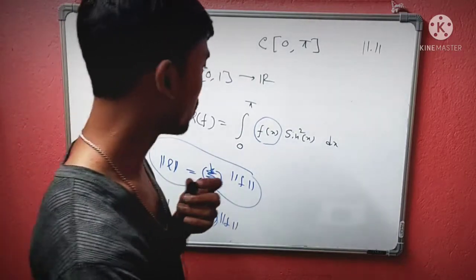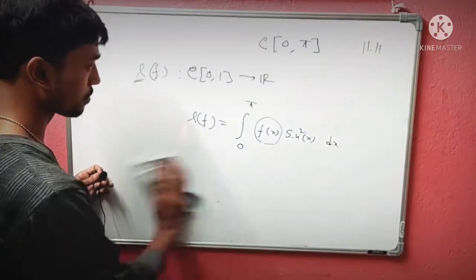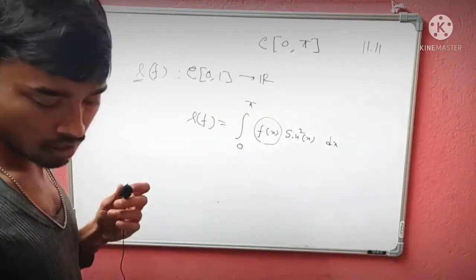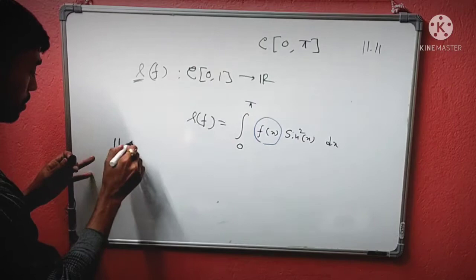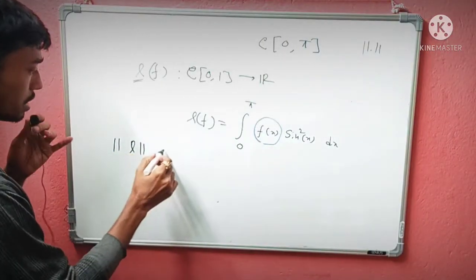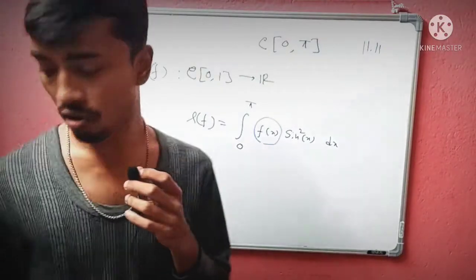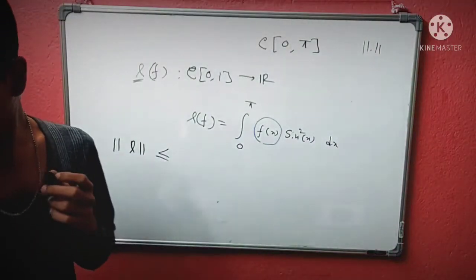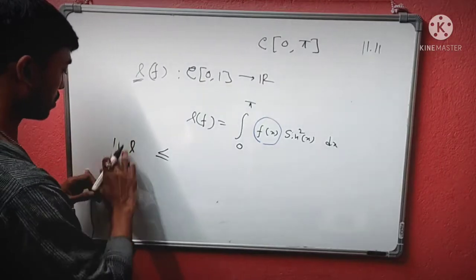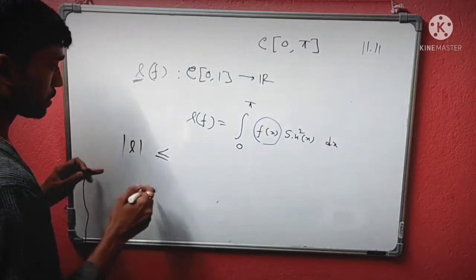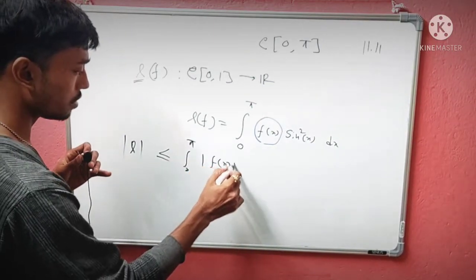We start with |L(f)| ≤ ||L|| · ||f||, where ||L|| is the modulus or norm of L. We begin with |L(f)| ≤ ∫₀^π |f(x)|sin²x dx.